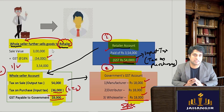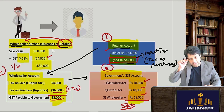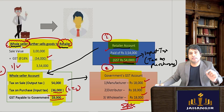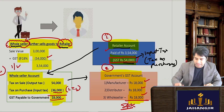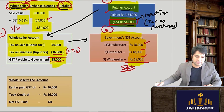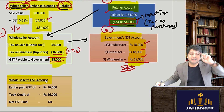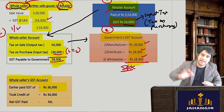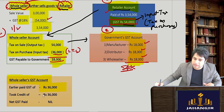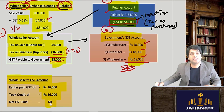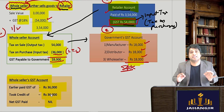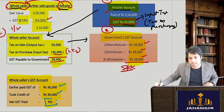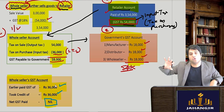In the government's account: all previous payments plus retailer's 36,000 add up. The government got the full 90,000 — but in parts: 18,000 from manufacturer, 18,000 from distributor, 18,000 from wholesaler, and 36,000 from retailer. The retailer's net GST is nil — he paid 54,000 earlier, takes a credit of 54,000, so ultimately he ends up paying zero GST. The entire load is on to the buyer.